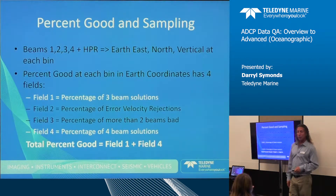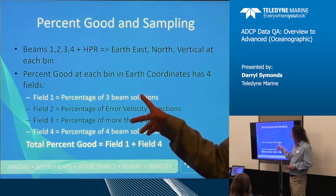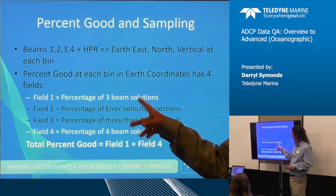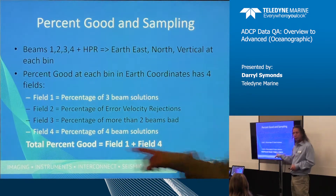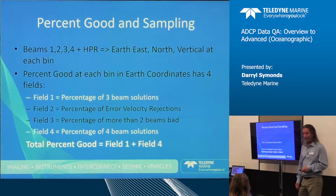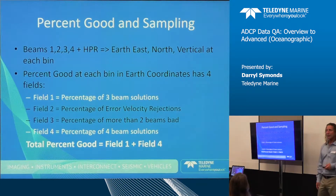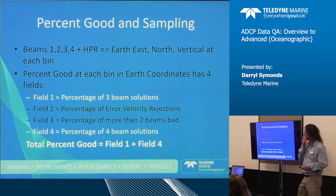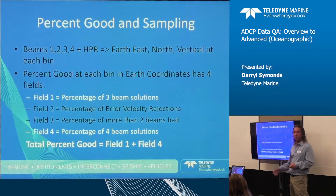For total possible good solutions it's field one plus field four — three-beam plus four-beam solutions added together. So if you have 20% three-beam solutions and 70% four-beam solutions, you have a total of 90% good coordinate transformations.